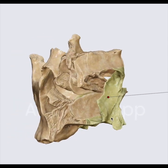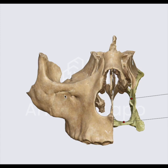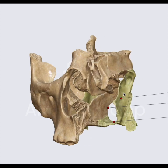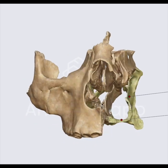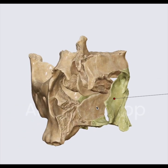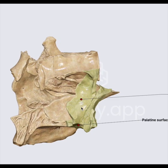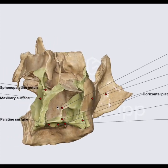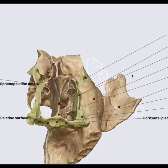This bone is located at the back of the nasal cavity. We are looking over there — this is the orbit, maxilla, zygomatic bone, nasal bones — and behind the posterior part of the nasal cavity, this is the palatine bone. The palatine bone is located between the maxilla and the sphenoid, which is attached behind.